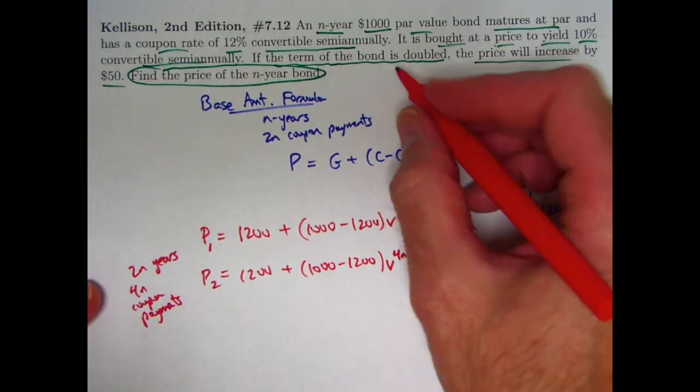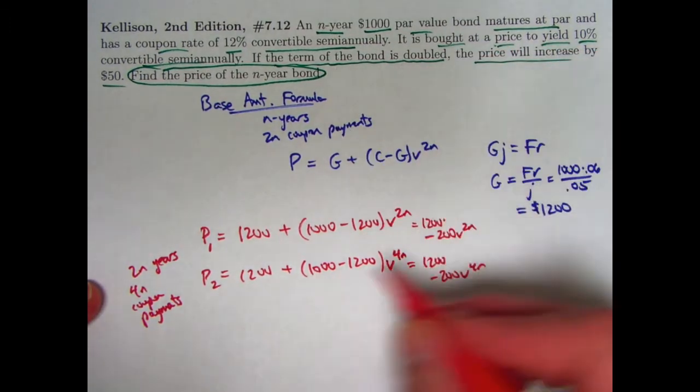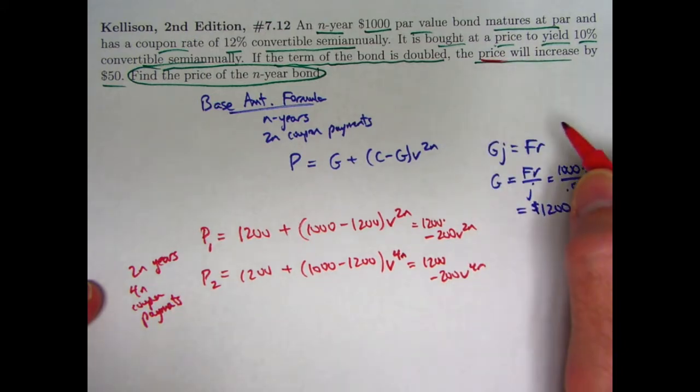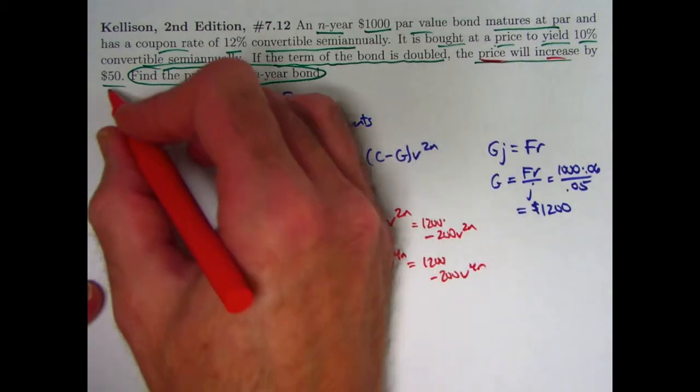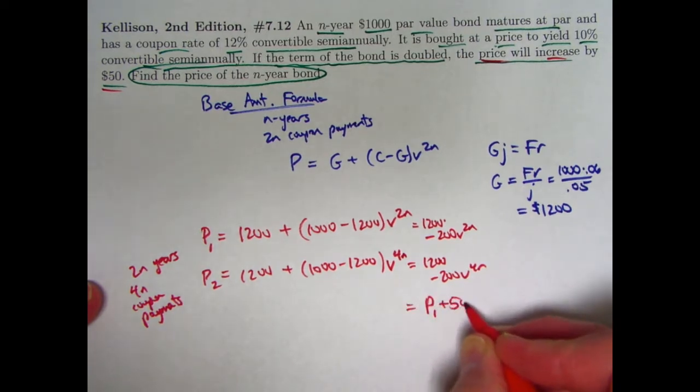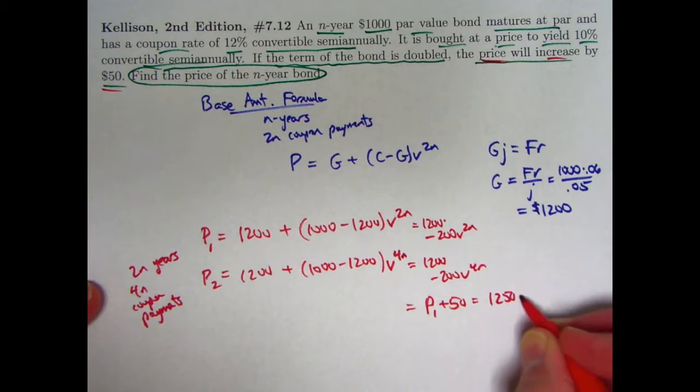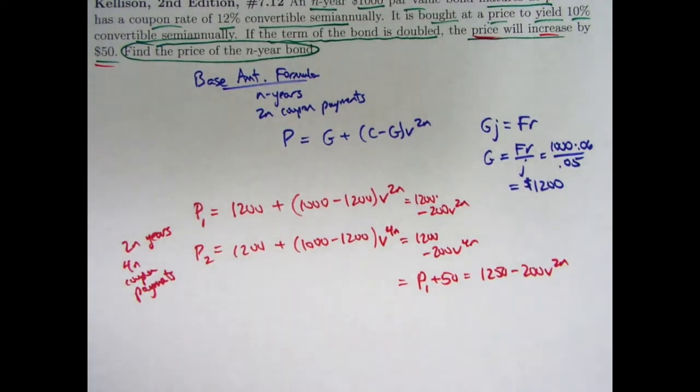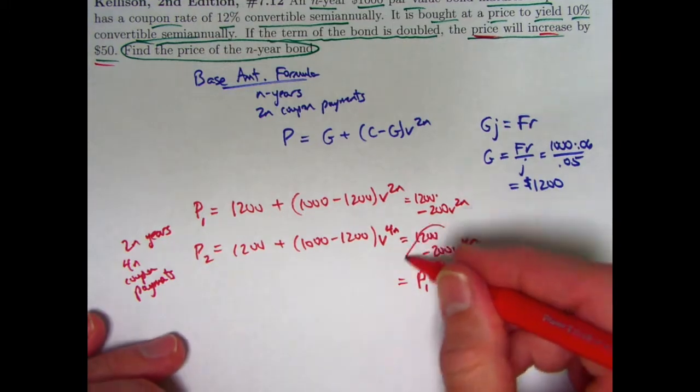And don't forget, we also know that if the bond term is doubled, the price, P2, of the new bond will increase from P1 by $50. This equals P1 plus 50. It equals 1,250 minus 200 v to the 2n. That's what this thing also equals.